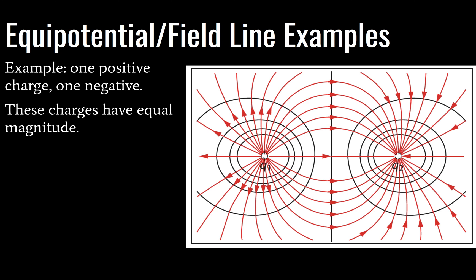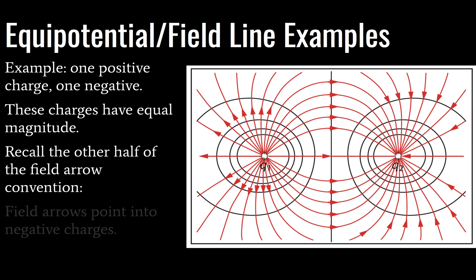The other thing we could look at to know that these charges were equal is the field line density. Field line density is just an indicator of how strong a relative charge or gravitational field is. In this case, we're looking at charge though. As I've already stated, field arrows do indeed point into negative charges.